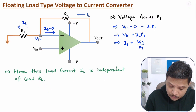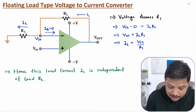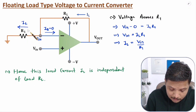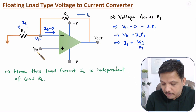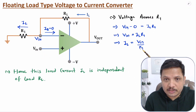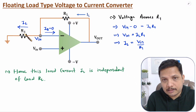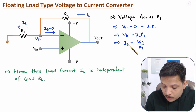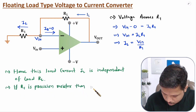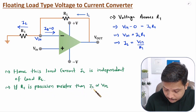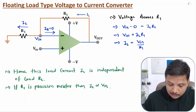If R1 is used as a precision resistor, then the load current IL will vary with respect to Vin only. So IL depends only on Vin and the fixed precision resistor R1.